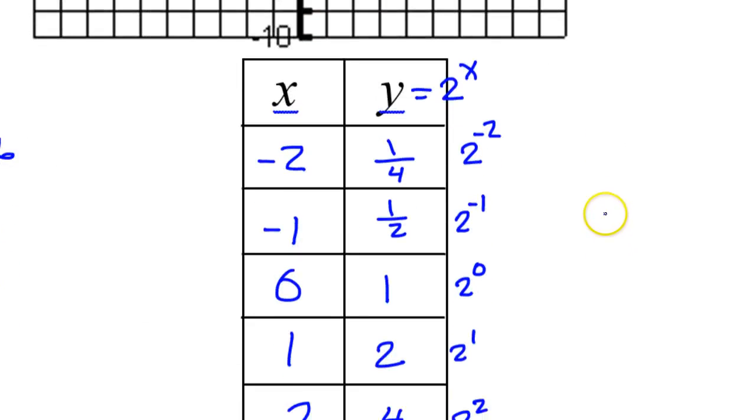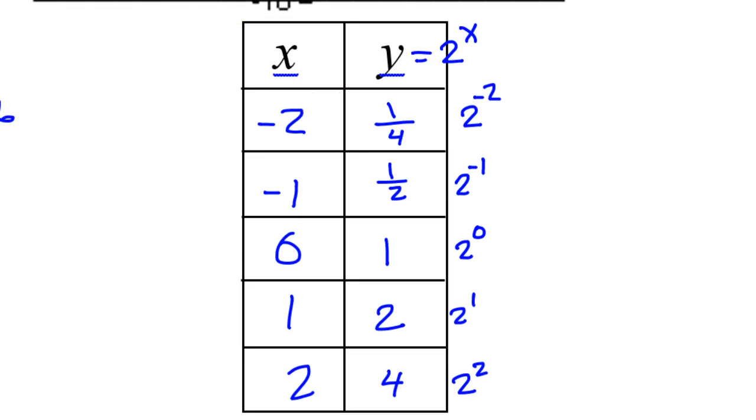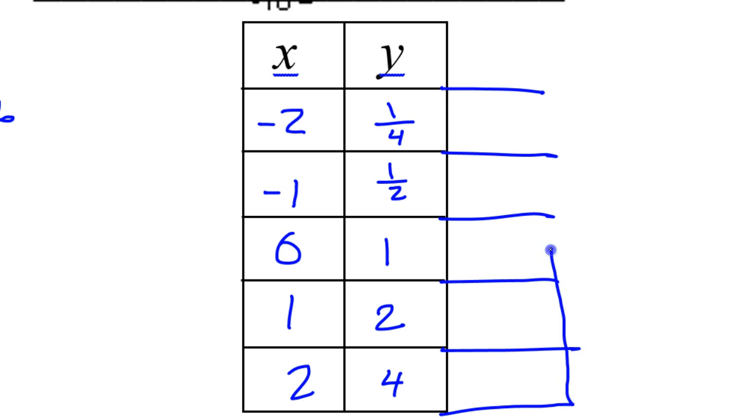I'm going to have to erase my work here and make a brand new y column. The new y column is going to be the a value times all the y's, so 3 times y. If I multiply all these by 3, that's going to give me 3 fourths, 3 halves, 3, 6, and 12. So that's my new y column.